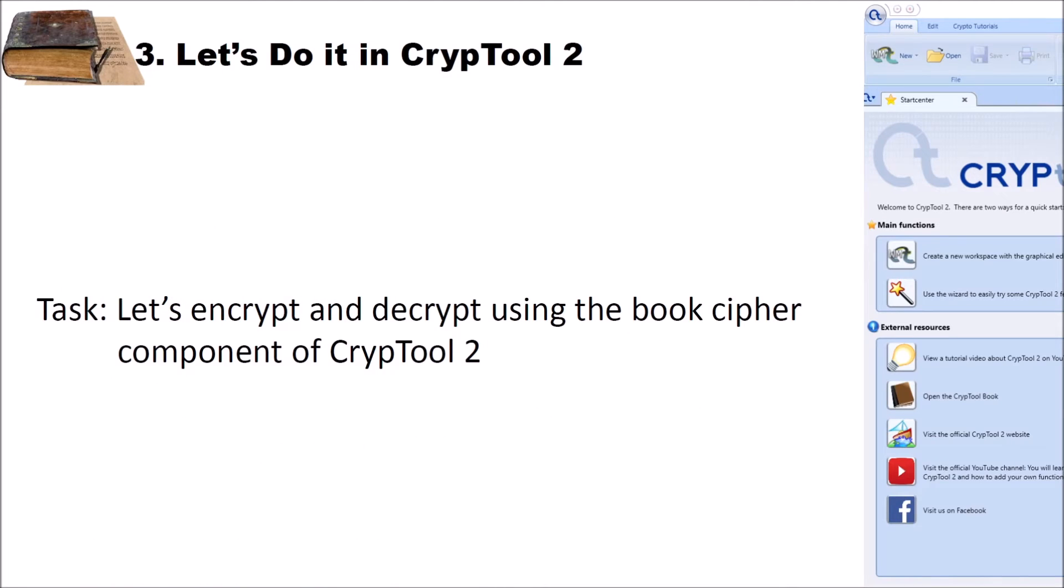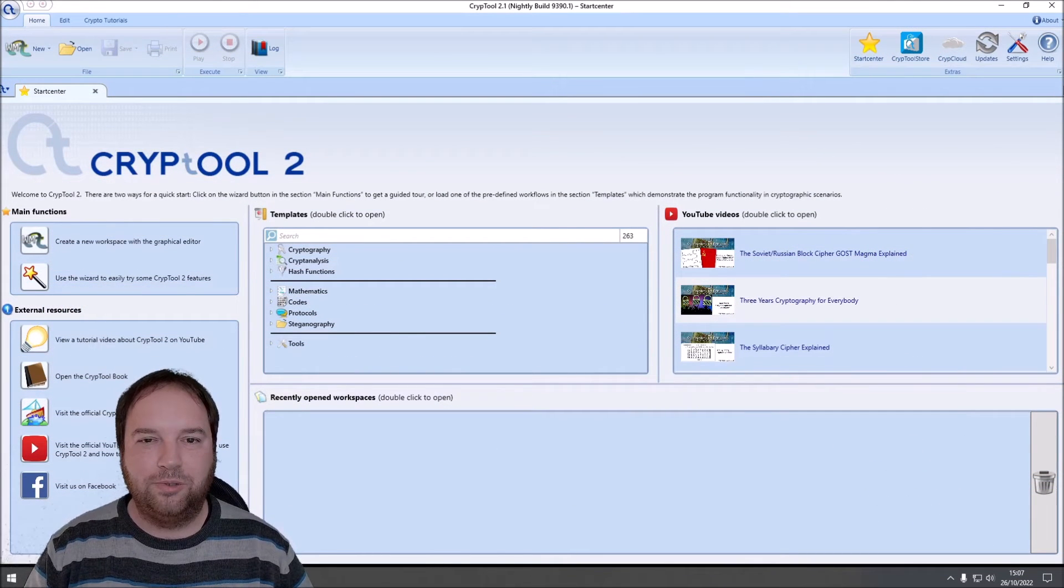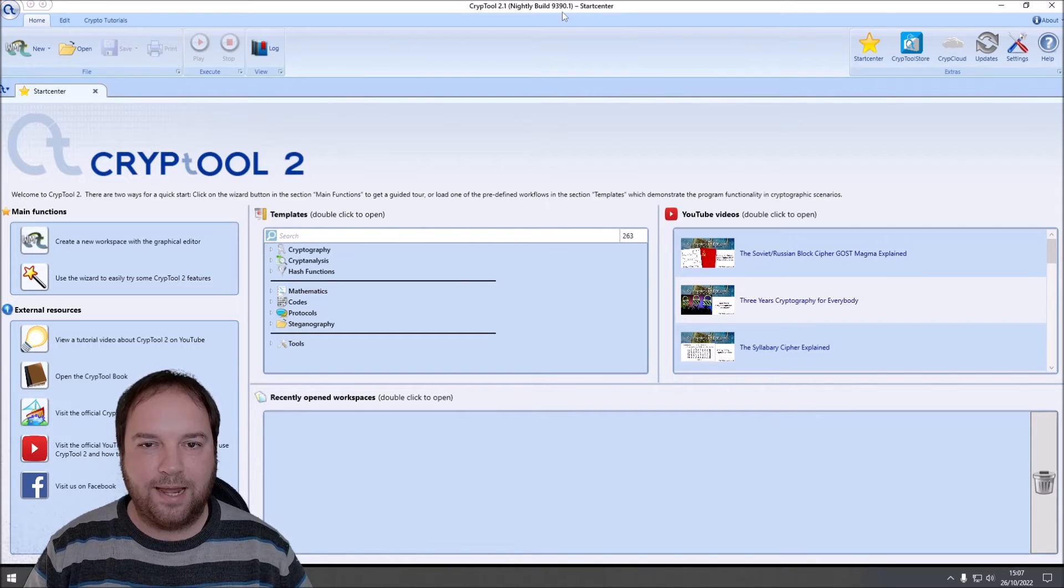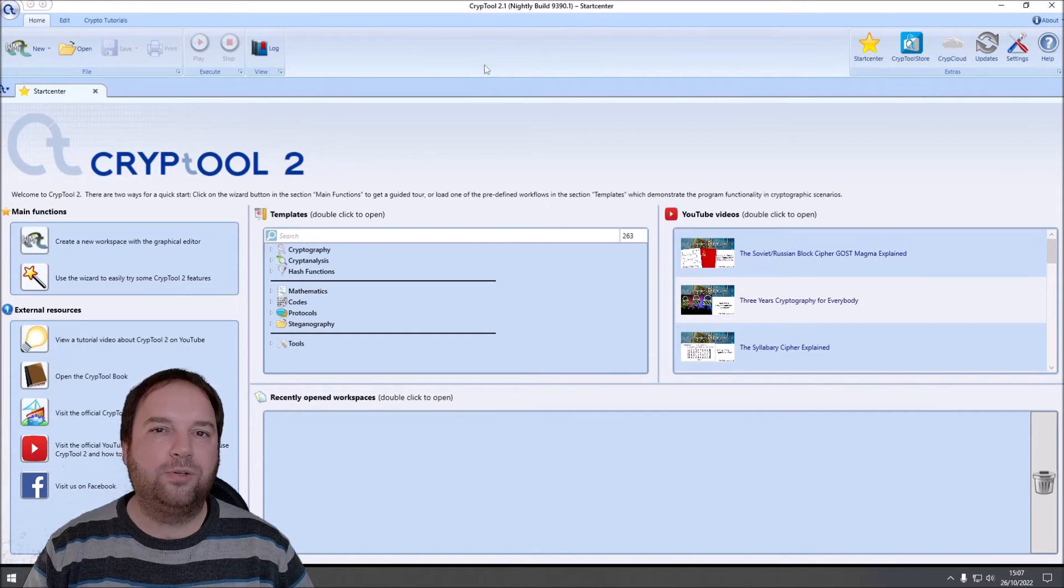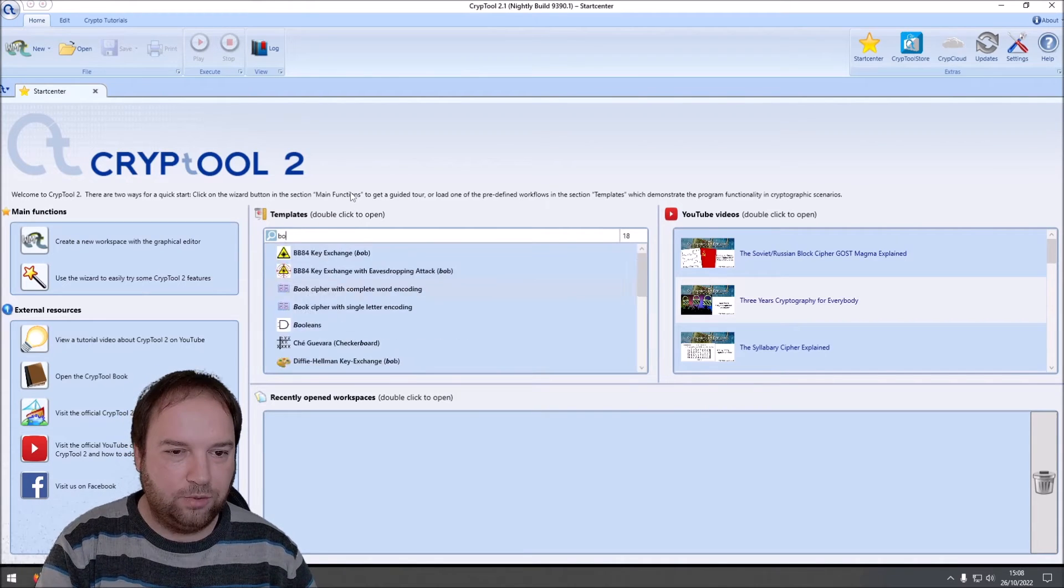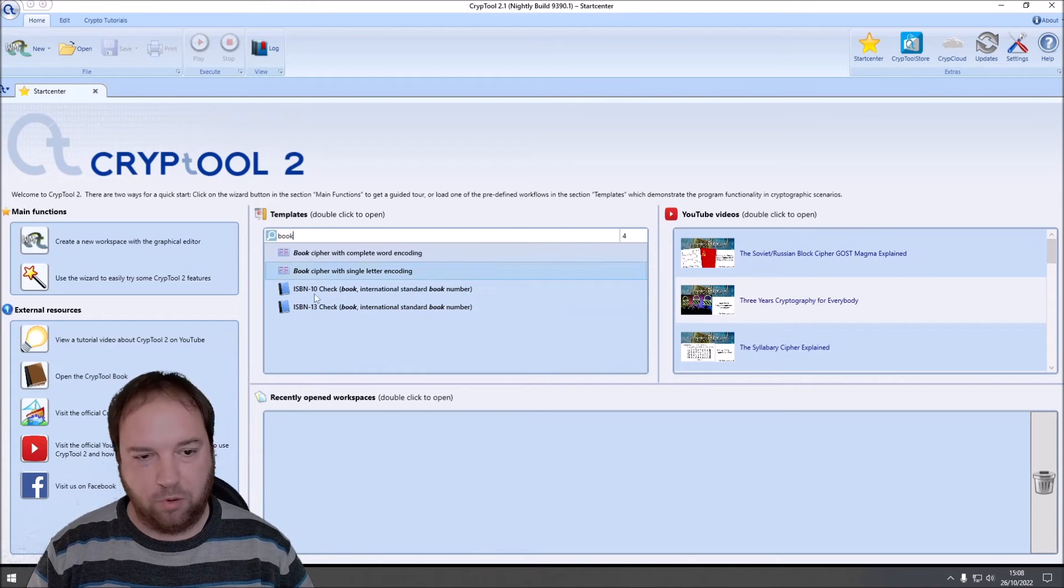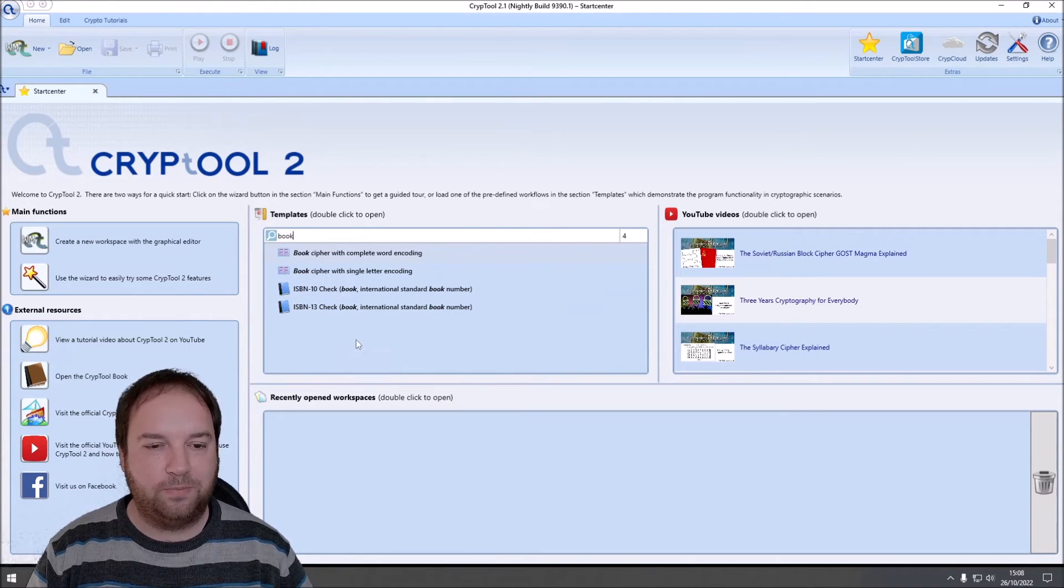Now that we know how book ciphers work, let's encrypt and decrypt using the book cipher component that we have created for CrypTool 2. I'm here now in CrypTool 2 in the current nightly build 93901. To do so, in the template section, I search for book cipher or for book. And we have two different workspaces, one with single letter encoding and one with complete word encoding. I start with the single letter encoding.